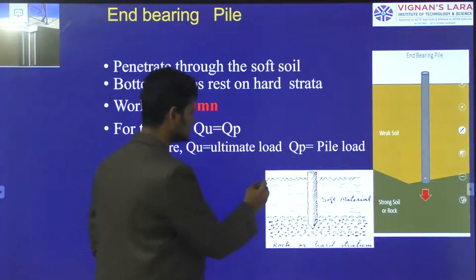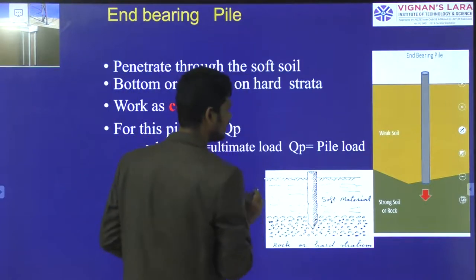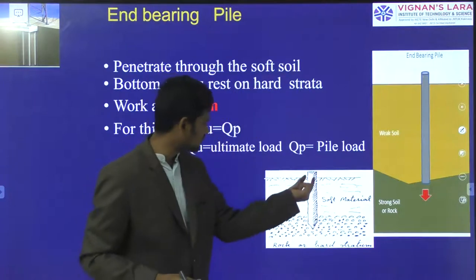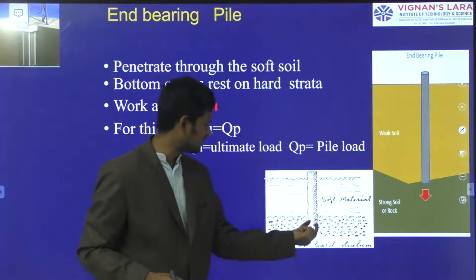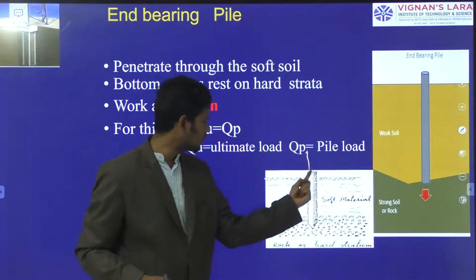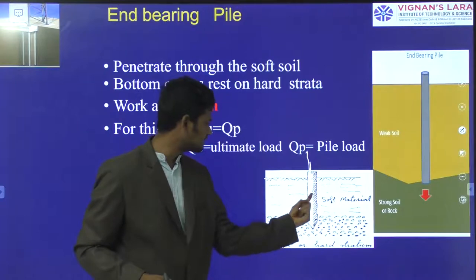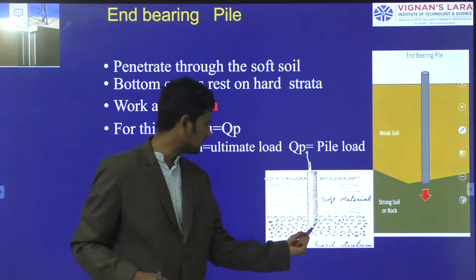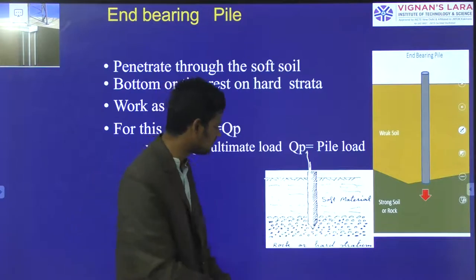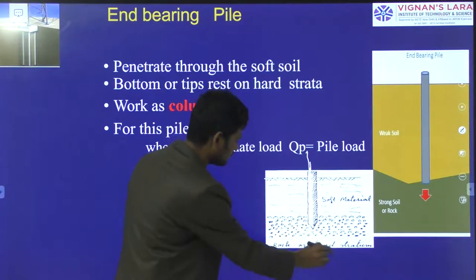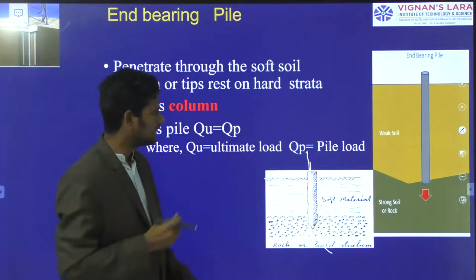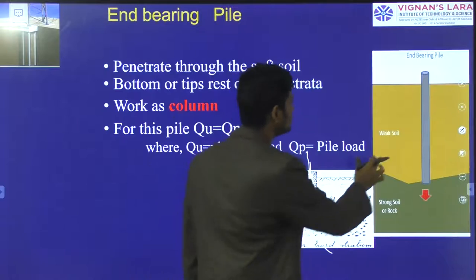If you observe here, this is the ground surface. We have inserted one type of pile, and this is the end or point resistance of the pile. The load applied at the top transfers through the pile, and from this point or end, it is distributed into the surrounding soil. This type of load transfer is called an end bearing pile.